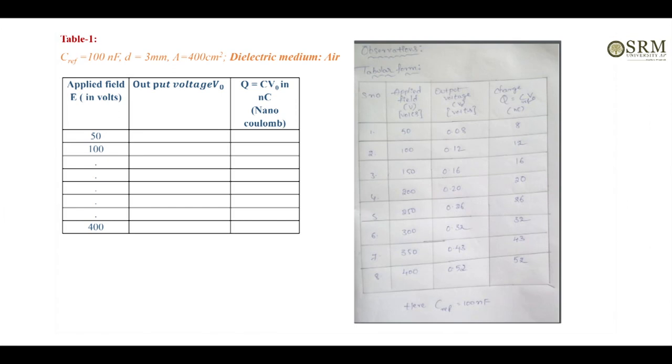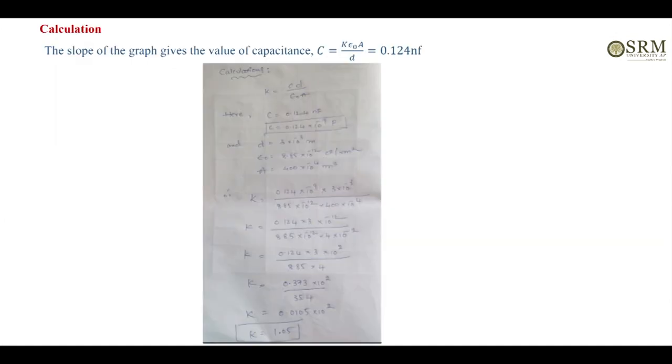After that, find Q value. Q value equals C into V0, C reference. Here reference capacitance is 100 nanofarads and V0 values are found using multimeter. Note down the values, that is Q value.